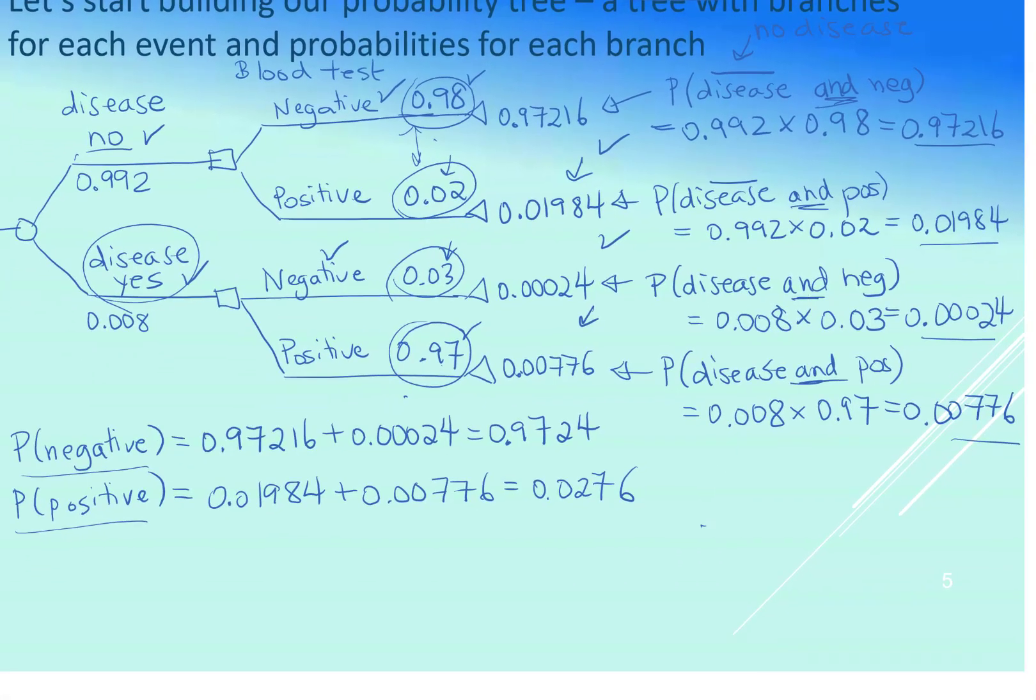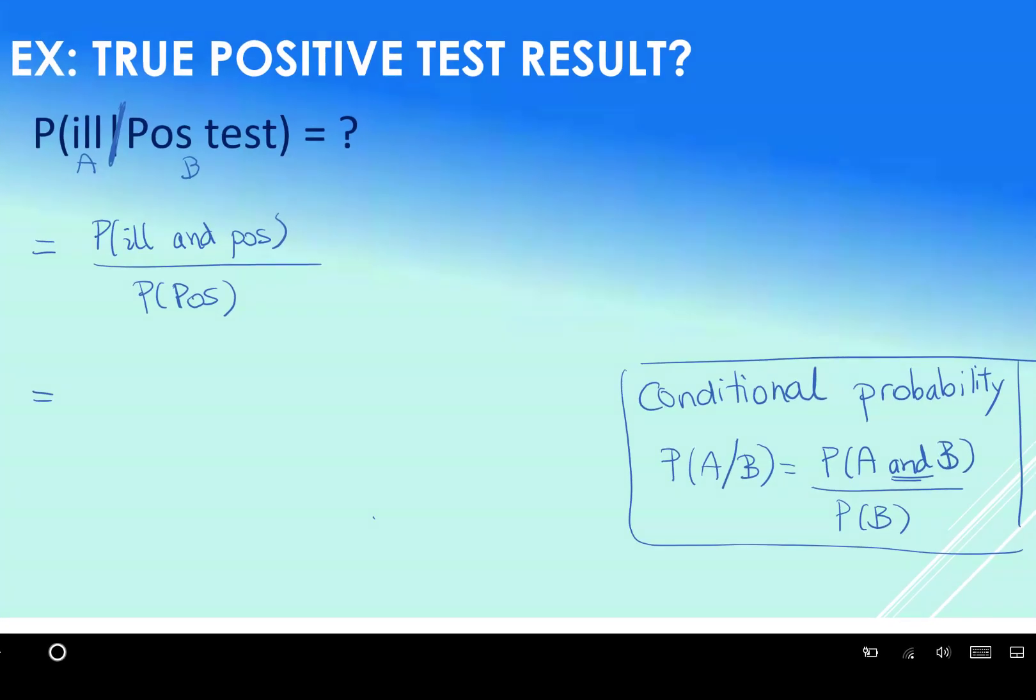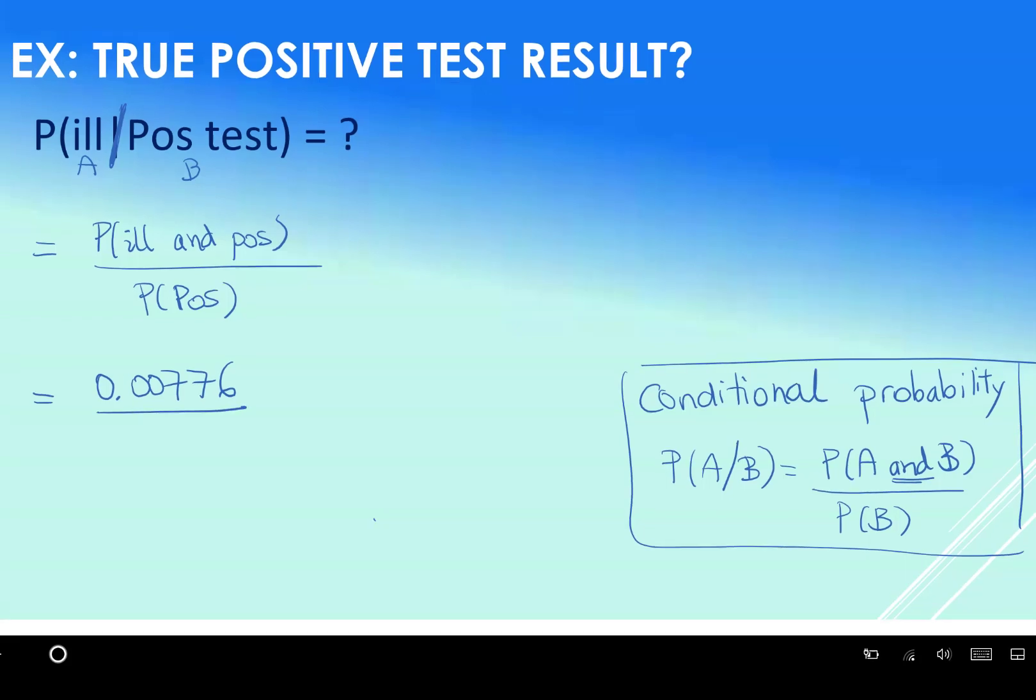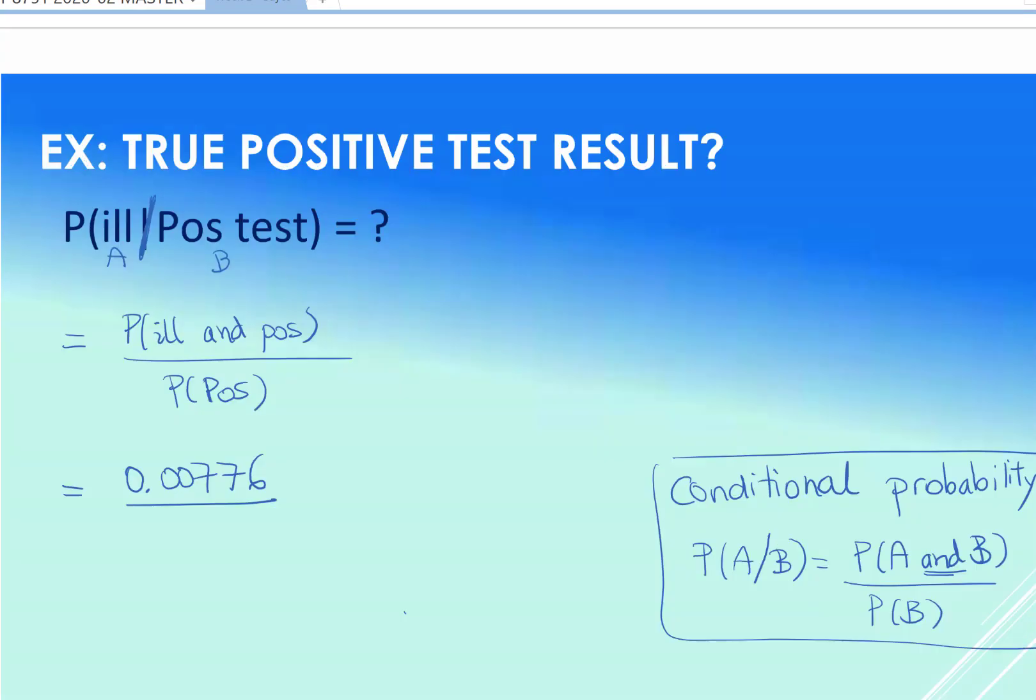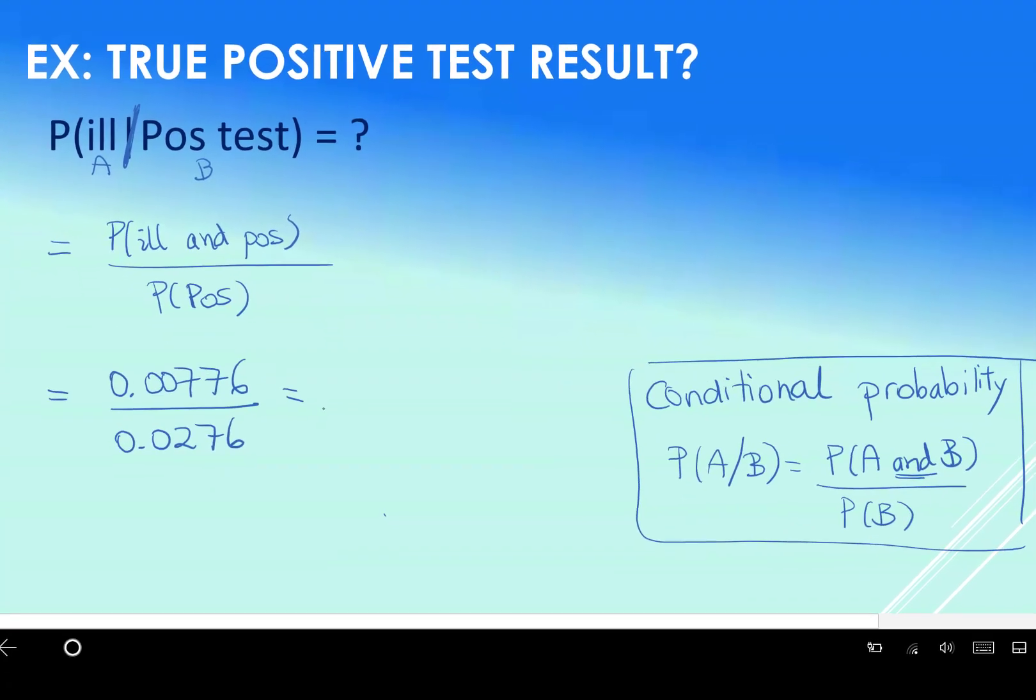So we have, in this case, somebody is ill, and they got a positive test result, that was this number right here. Okay, we had that on our tree. So let's go back and have a look at that. Ill and positive, that is that 0.00776. And the odds of positive, we also went and got that. So odds of positive right here, we went and got, that was that 0.0276.